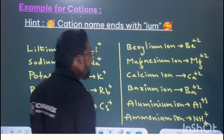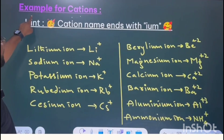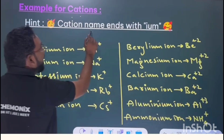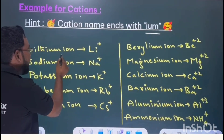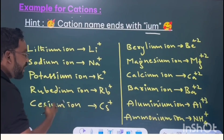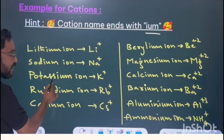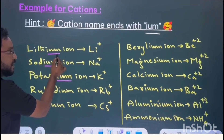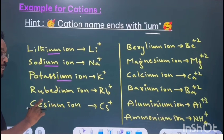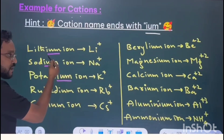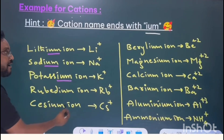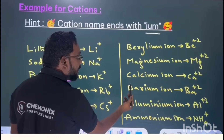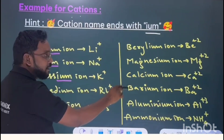Now let me give you some examples of cations and anions. One hint you should remember: the cation name ends with '-IUM'. If the name of an ion ends with '-IUM', that is a cation. For example: lithium ion, sodium ion, potassium ion, rubidium ion, cesium ion, beryllium ion, magnesium ion, calcium ion, barium ion, aluminum ion, and ammonium ion. The formulas are given.